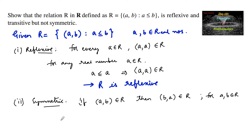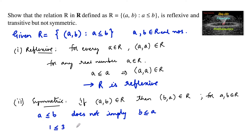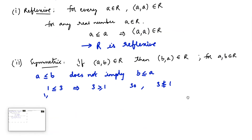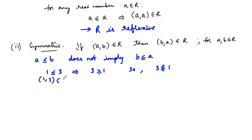We know that a ≤ b does not imply b ≤ a. For example, 1 ≤ 3 implies 3 ≥ 1, so 3 is not less than or equal to 1. Therefore, (1, 3) belongs to R but (3, 1) does not belong to the relation. Hence, R is not symmetric.